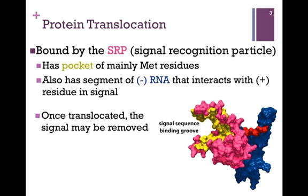There is also a segment of negatively charged RNA, shown in blue in our surface model, and that will interact strongly with that positively charged residue in the signal sequence. Therefore, we have a specific signal sequence and a specific protein to recognize it. Once the protein is translocated, the signal is often removed. This would be a specific example of how the final polypeptide may not have exactly the same number of amino acids, or the same content, as specified by the message.